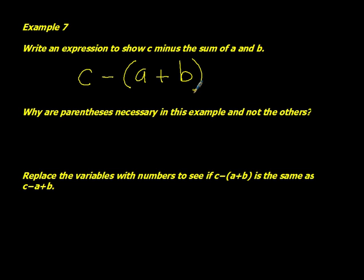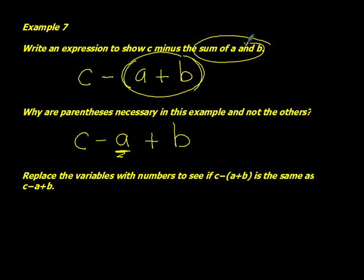Well, the problem is here, we want to subtract the complete sum of A and B from C. If we didn't, if we left it just like this, we'd be taking away just the A and then adding on B. But we want to take the sum of A and B away from C. So you do need to have the parentheses in place.